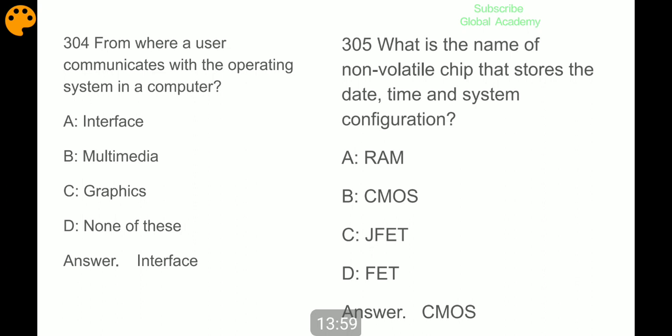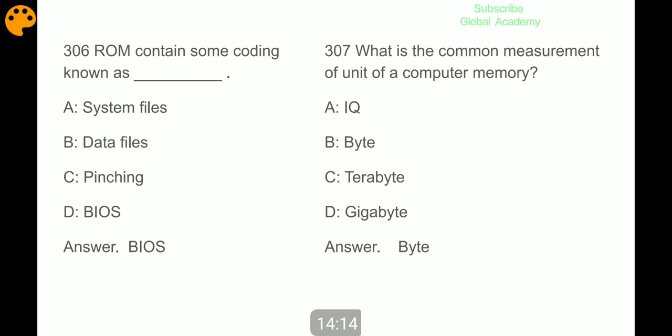From where a user communicates with the operating system in a computer? Interface. What is the name of a non-volatile chip that stores the date, time, and system configuration? CMOS. CMOS ROM contains some coding known as BIOS. What is the common measurement unit of a computer memory? Byte.